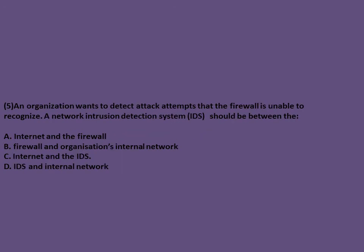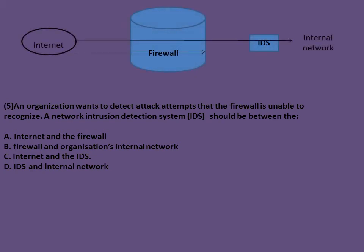An organization wants to detect attack attempts that the firewall is unable to recognize. IDS should be placed between the internet and the firewall, so that even if attacks are not blocked by the firewall, the IDS will be able to monitor and record such attacks.